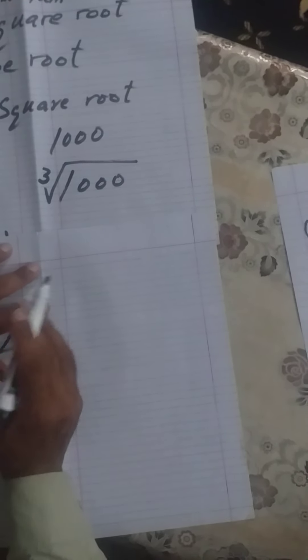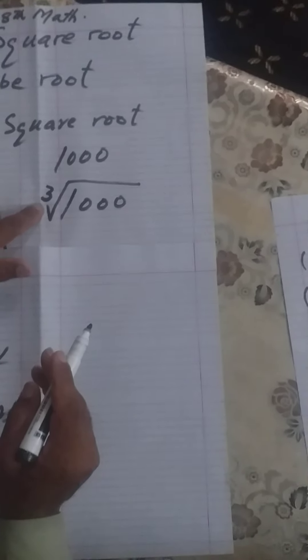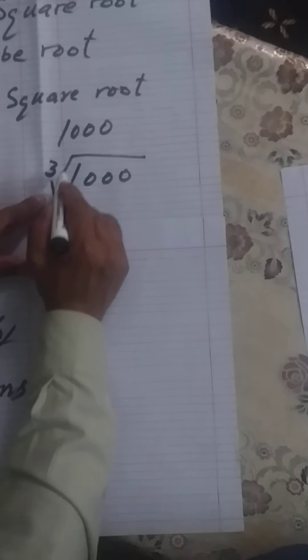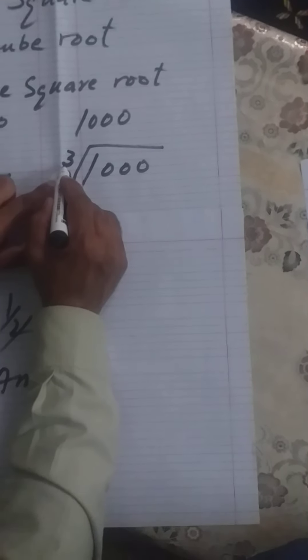We can write it here. Because square root we find here with one over two. But here we can make it one over three.